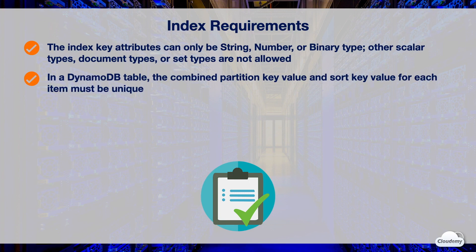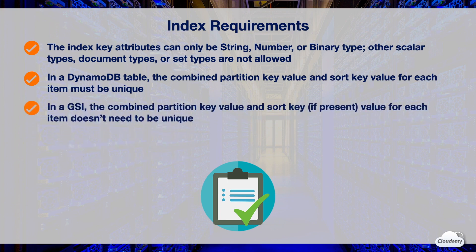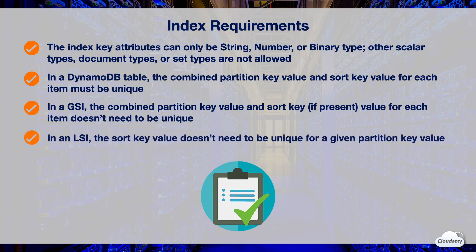In a DynamoDB table, the combination of partition key and sort key values for each item must be unique. In a GSI, the partition key and sort key attributes can be different from the base table, and the combination does not need to be unique. If the GSI primary key is partition key only, it can have the same value for different items. If the GSI primary key is composite, the combined value also doesn't need to be unique. If multiple items in the GSI have the same key value, a query returns all matching items.